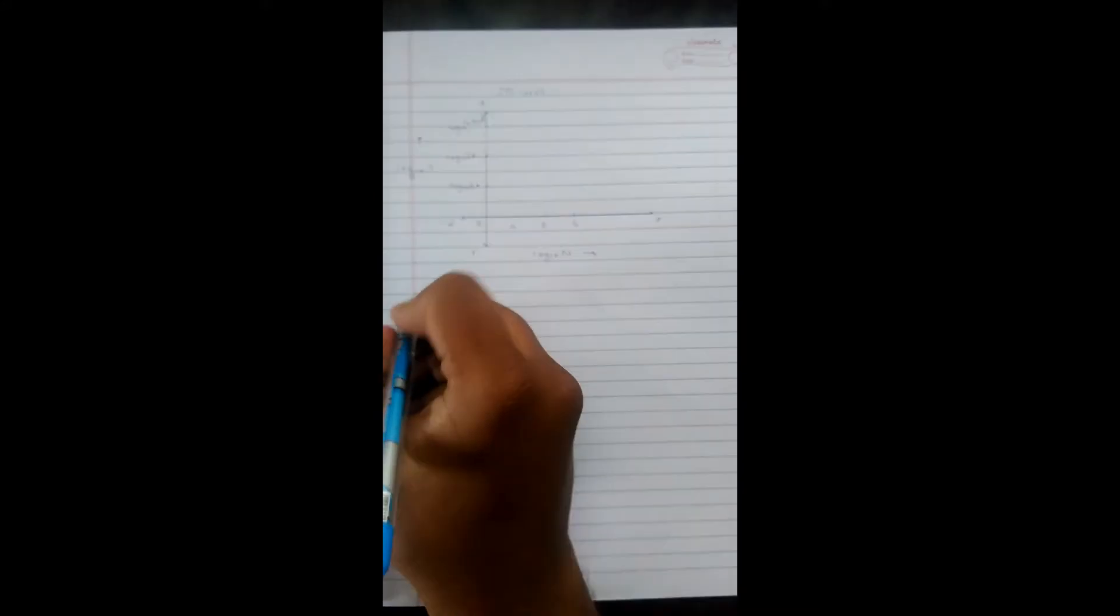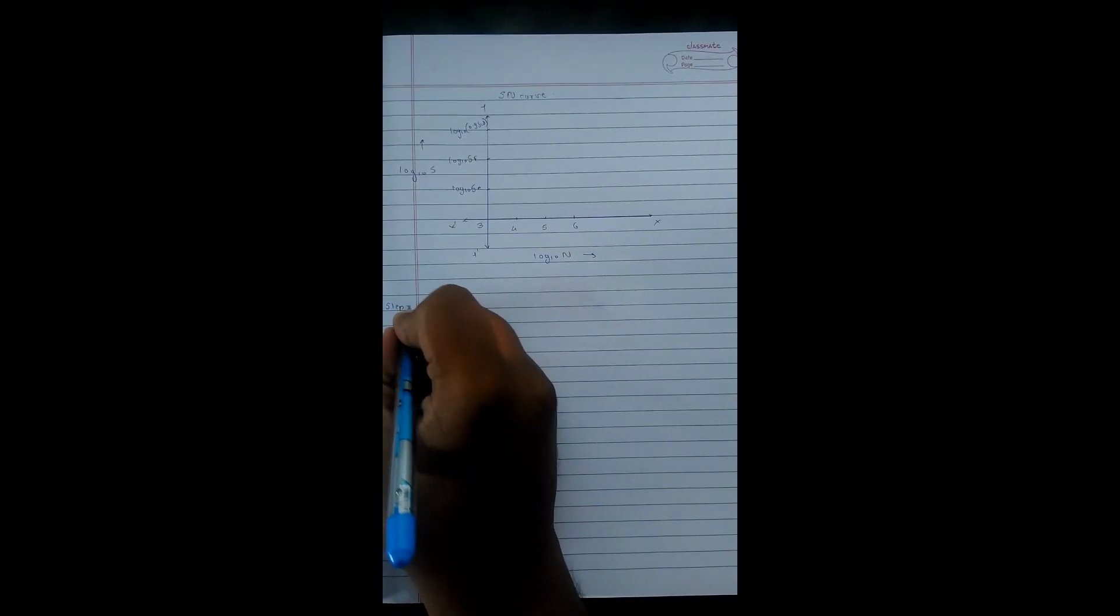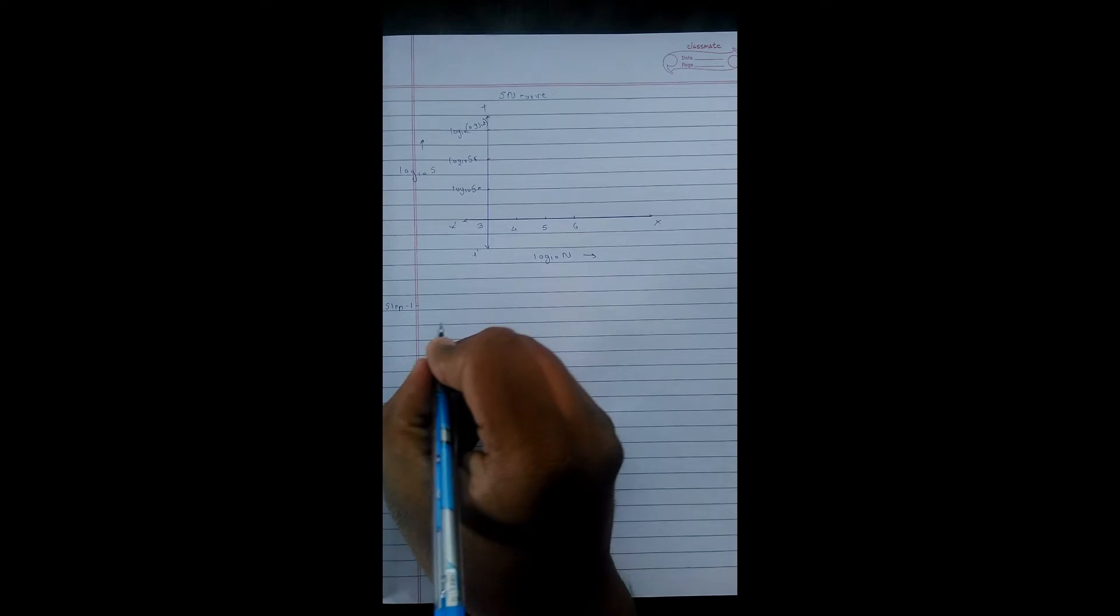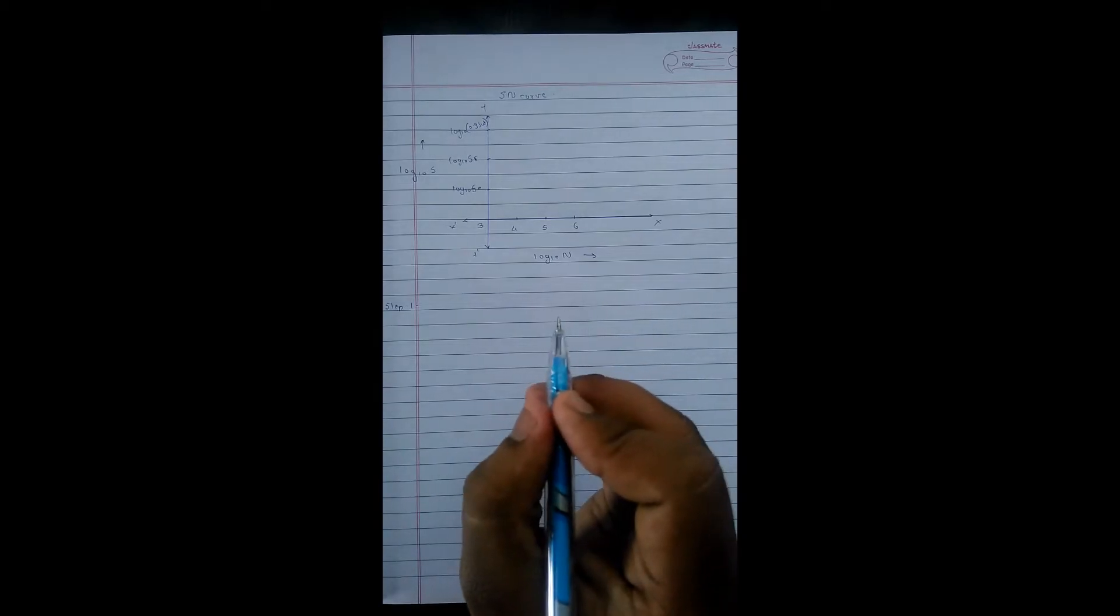As our scale is ready to draw the S-N curve, we will take a procedure wise approach. Step number one: this step states that locate point A on the scale 3 and log 10 0.9 Sut.